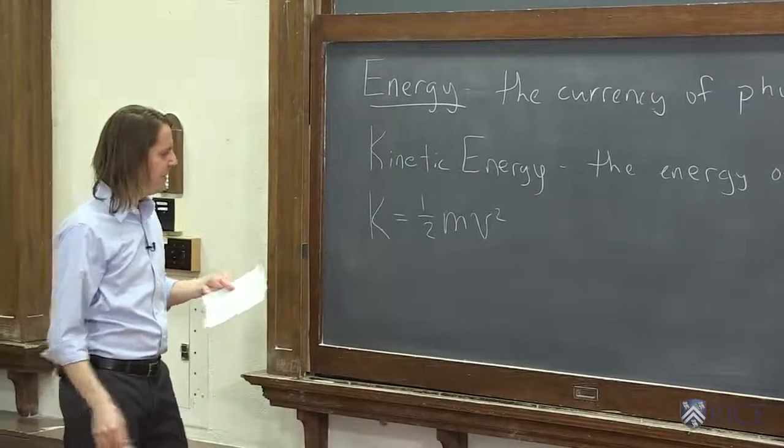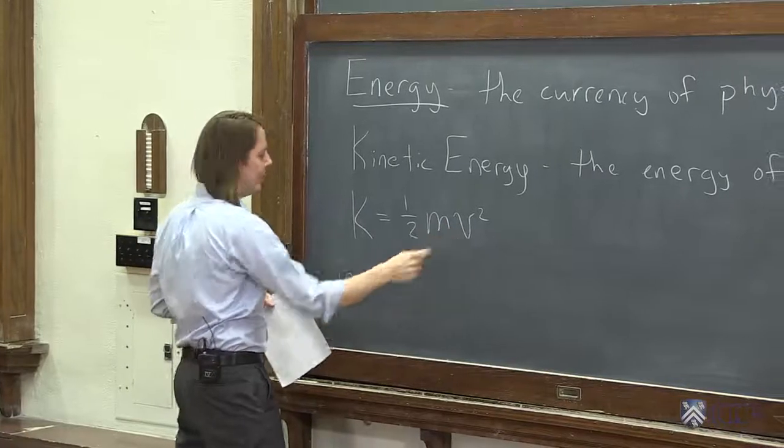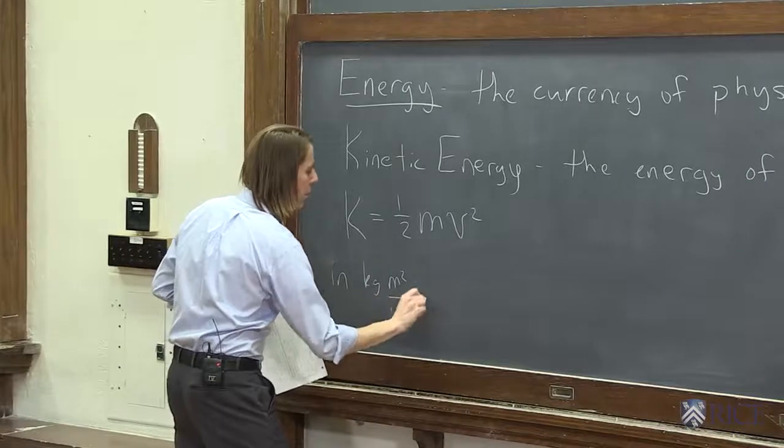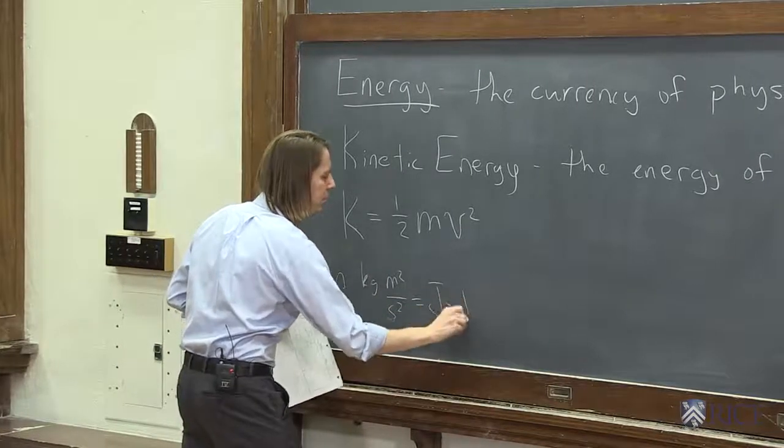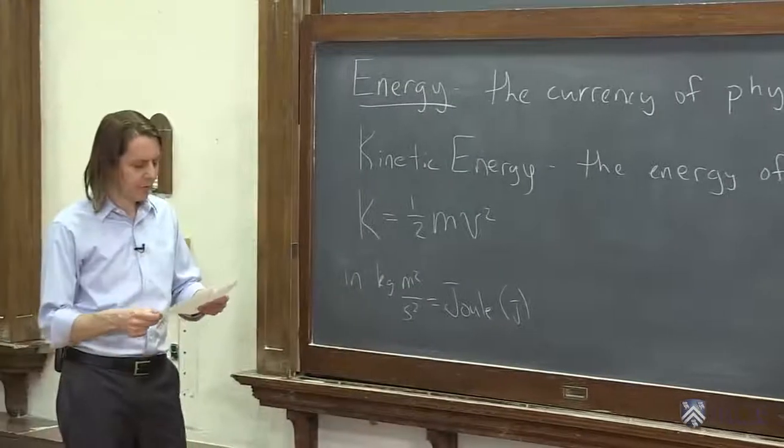One-half mass times the speed squared. It is in, we can get the unit, kilogram meter squared per second squared, which is equal to a joule. So the MKS unit for energy is the joule, which is abbreviated big J.